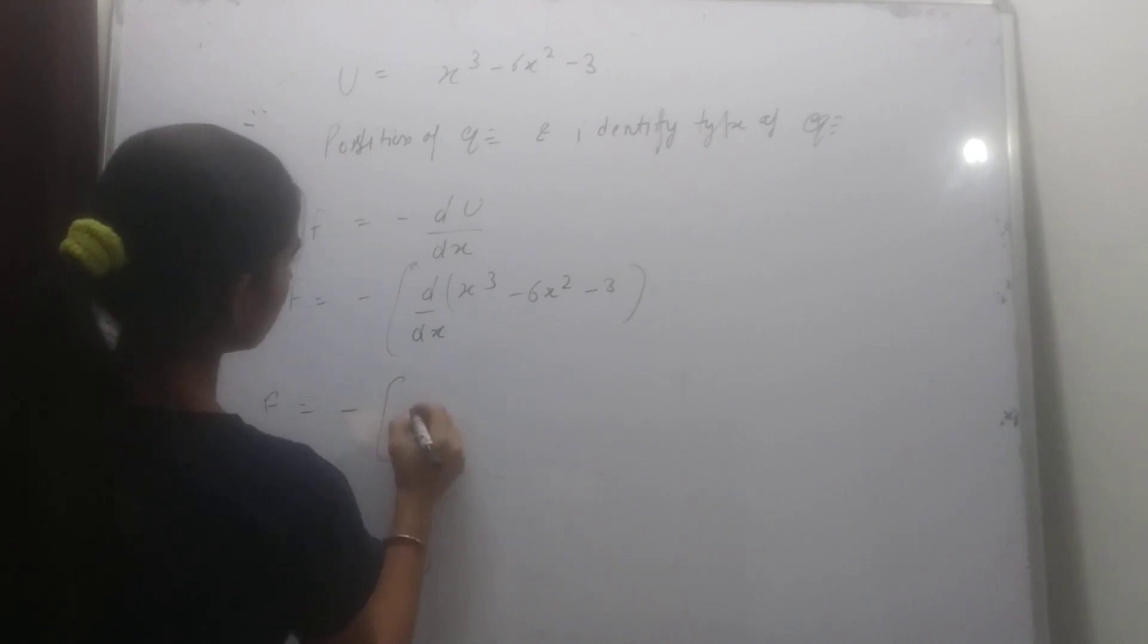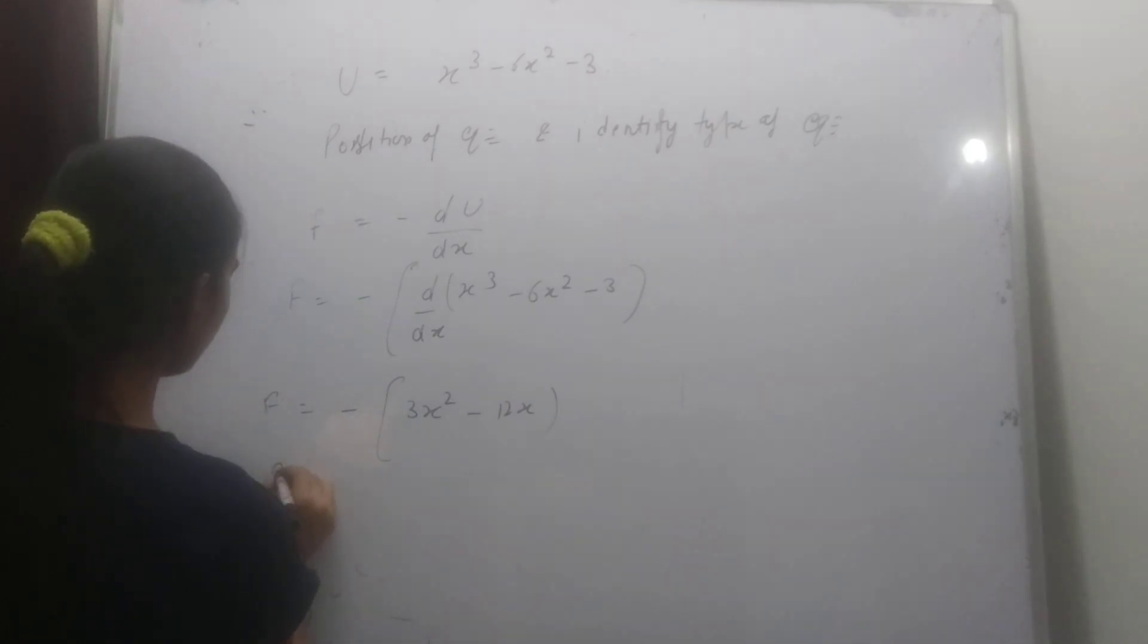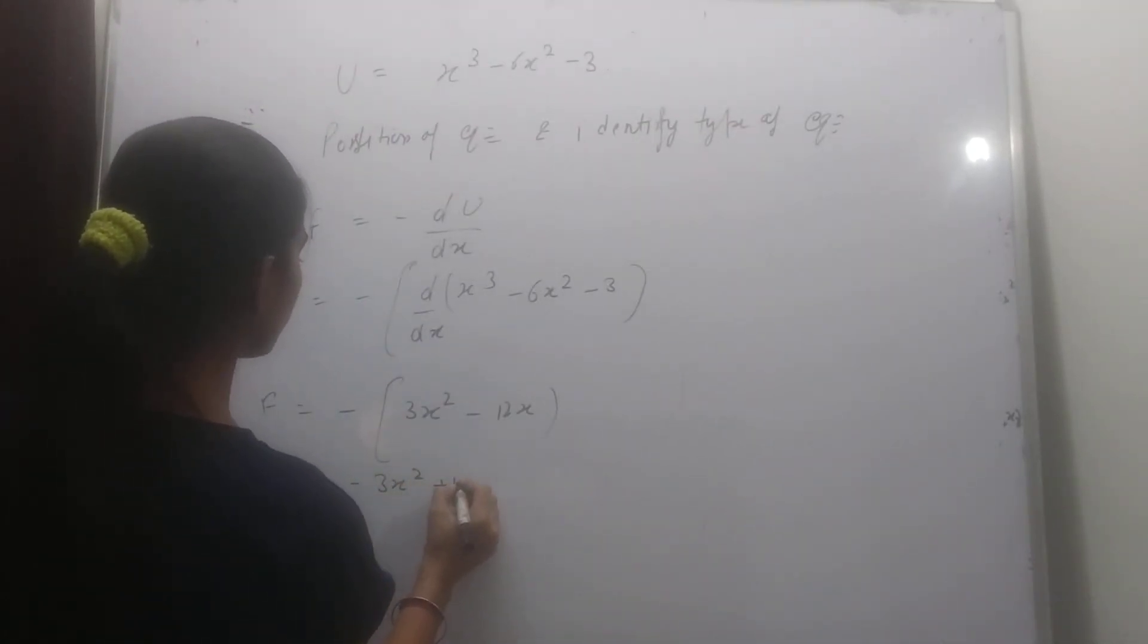F equal to minus 3x square minus 12x. So F equal to minus 3x square plus 12x.